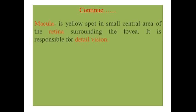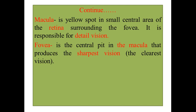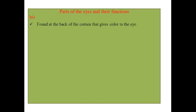The other structures of the retina are the macula and fovea. The macula is a yellow spot found on the small central area of the retina that surrounds the fovea — it supports us to have detailed vision. The fovea is found at the central pit in the macula and also produces sharp, very clear vision.